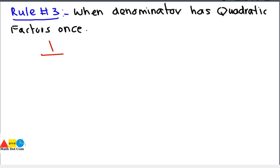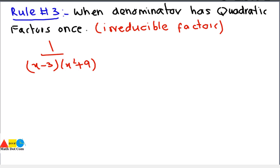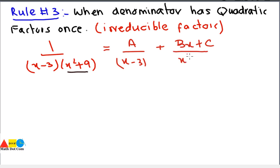Rule number three is when the denominator has quadratic factors — specifically irreducible quadratic factors. For example, 1 divided by (x-3)(x²+9). Here the quadratic factor is x²+9. In this case, you write the partial fractions as A divided by (x-3) — since that is a linear factor — plus Bx+C divided by (x²+9). So A, B, and C are to be found in order to find the partial fractions.